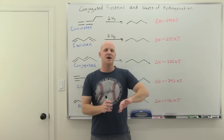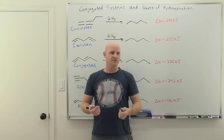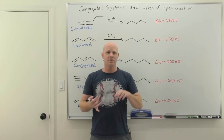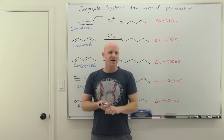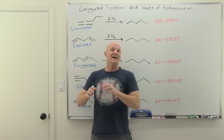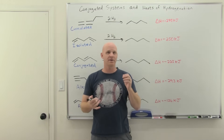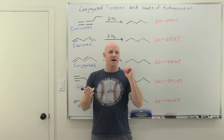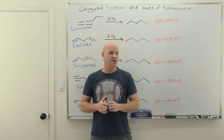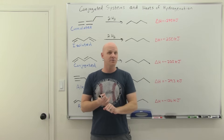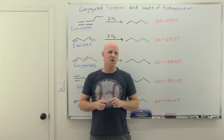The first half of this chapter is devoted to conjugated systems — we'll discuss pi molecular orbitals, UV-vis spectroscopy, and addition reactions to dienes. The second half covers pericyclic reactions, including cycloaddition reactions, an entire lesson on Diels-Alder reactions, electrocyclic reactions, and sigmatropic rearrangements.